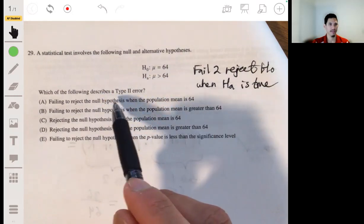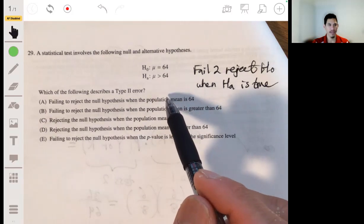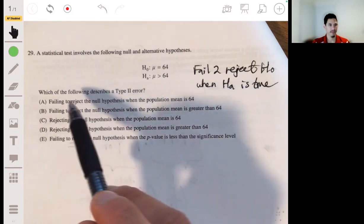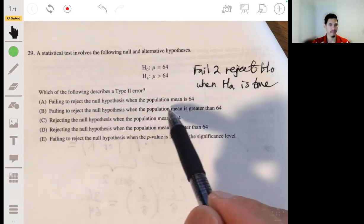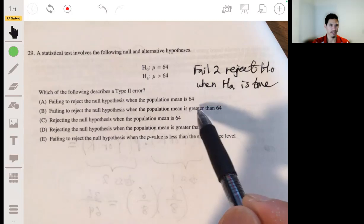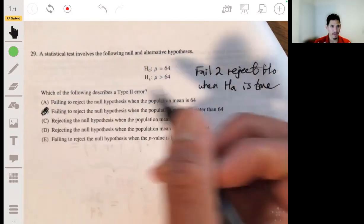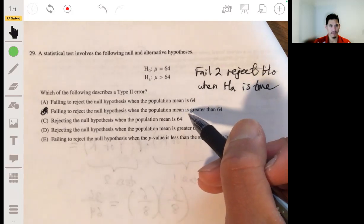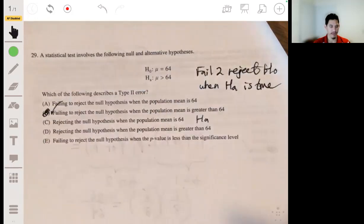So let's see which of those would make sense. Fail to reject null hypothesis when population mean is 64? No. It would be when it's greater than 64. So it looks like it's failing to reject H0 when the population mean is greater than 64. That would be B. The population mean being greater than 64 is HA. The answer is simply B.